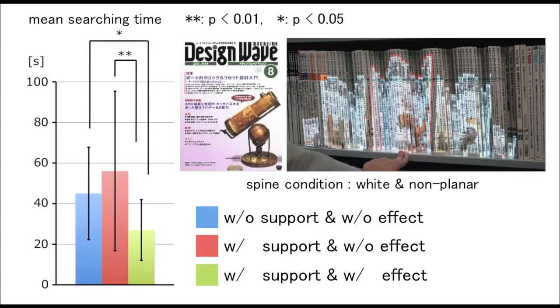When the depth of the spine from the shelf edge varied among the magazines, it was confirmed that the proposed support with the continuous resizing effect could improve the book searching task in the spines condition. On the other hand, the support without the effect did not improve the task.